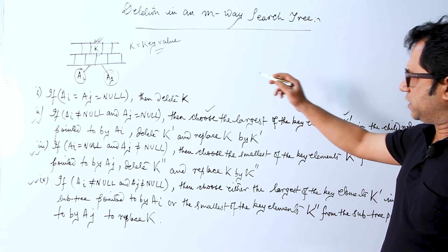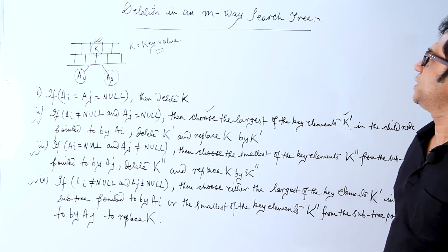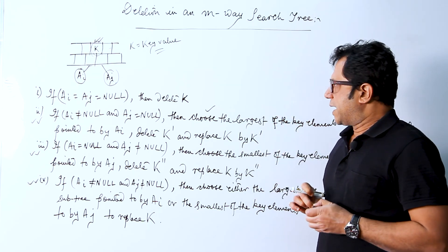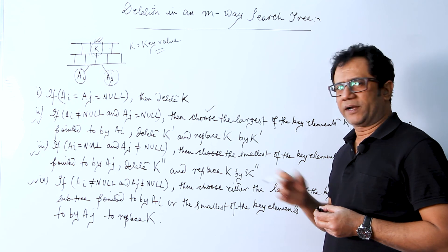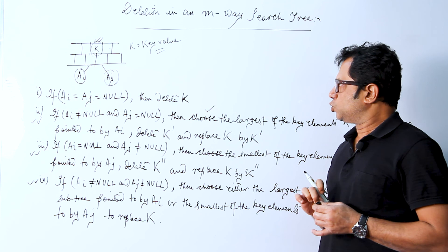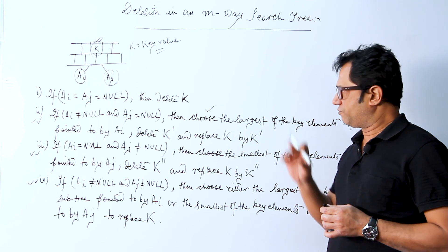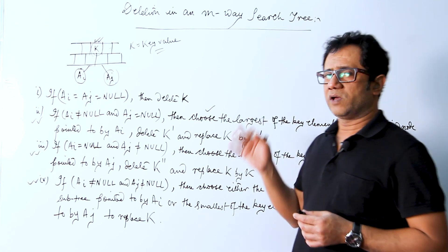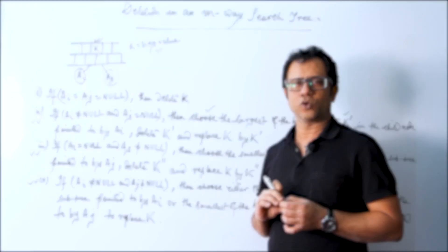These are the four cases we can encounter in deletion in an M-way search tree. This is the theory portion covered in this video. An example illustrating these cases will be given in a later video, so I recommend watching that for a clearer understanding. If you have any doubts or queries, please post them in the comment section below. Thanks for watching.